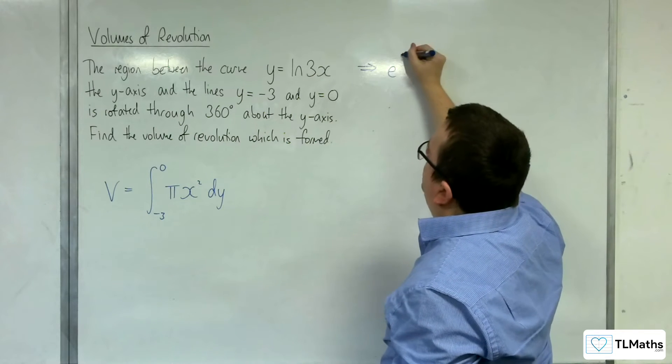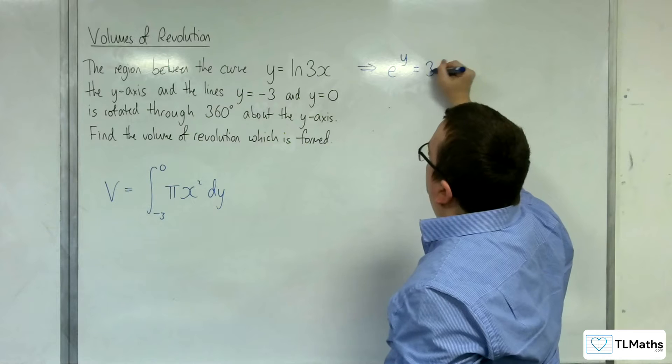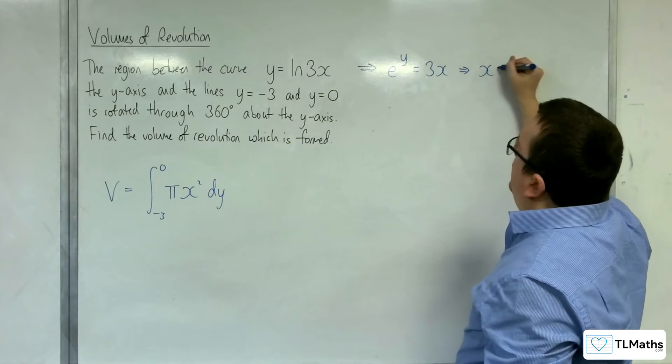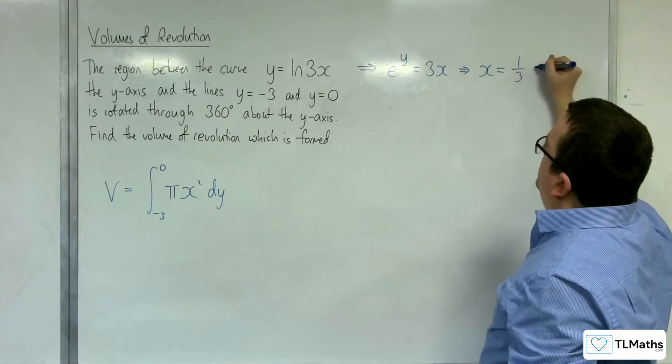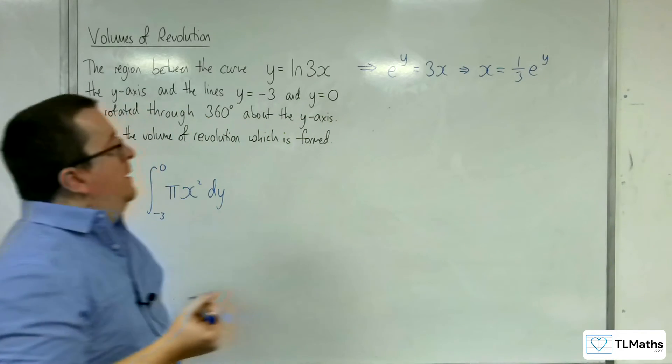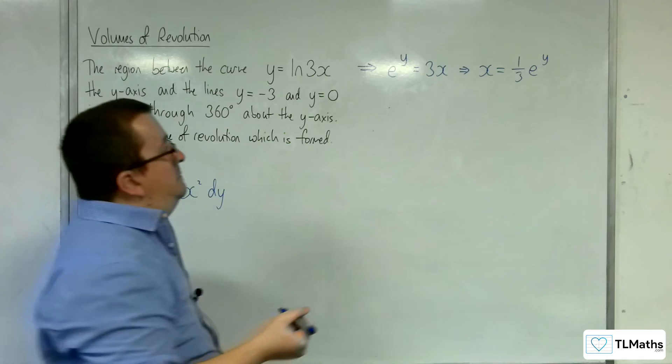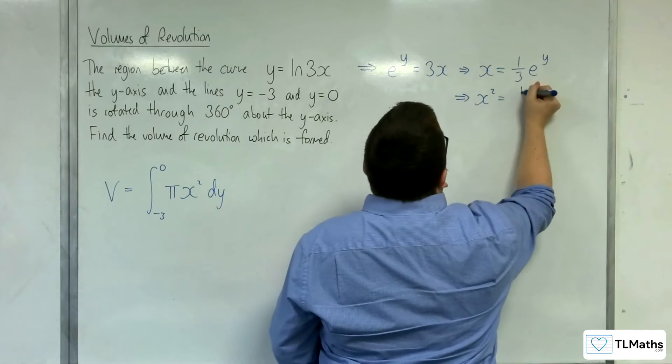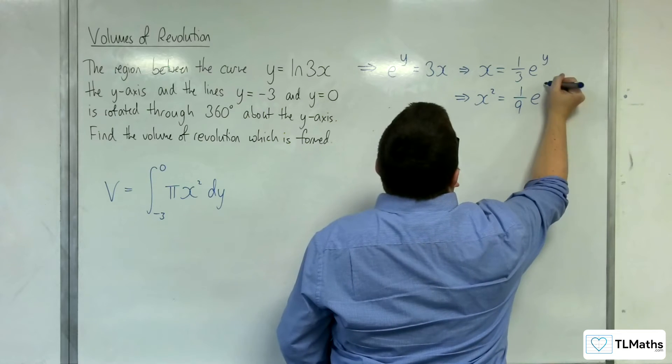So I can write that e to the y would be equal to 3x. So that means that x is equal to 1 third e to the y. So x squared would be equal to 1 ninth e to the 2y.